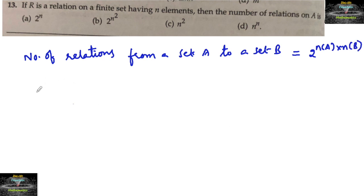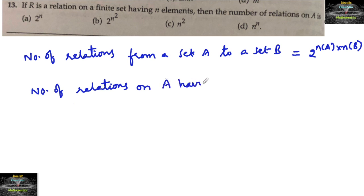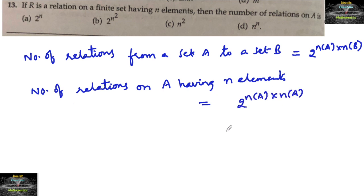Here, the number of relations on A having n elements — set A is having n elements — so this can be written as 2 to the power of n(A) into n(A), that is 2 to the power of n into n, which equals 2 to the power of n squared.